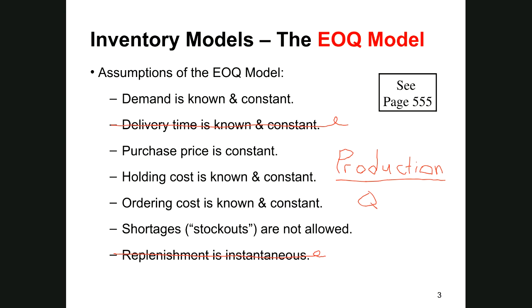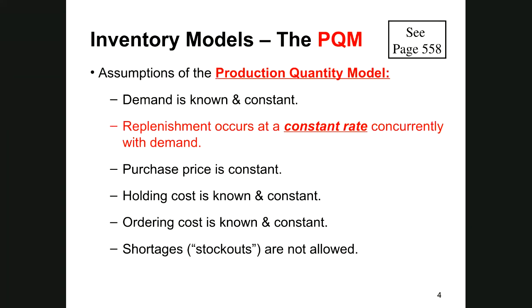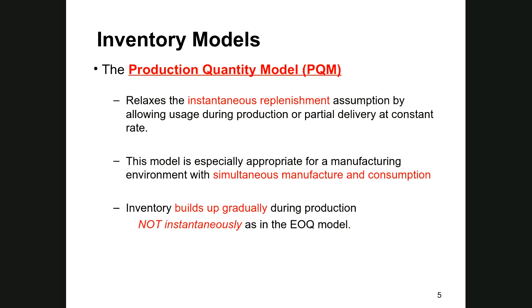Here's the summary of assumptions: demand is known and constant, replenishment occurs at a constant rate so our production is never interrupted, and it occurs at the same time that we're consuming. Purchase price remains constant, holding costs and ordering costs apply, and no stockouts are allowed — just as with the EOQ. The key thing to recognize is that we're producing at the same time that we're consuming, so we do away with instantaneous replenishment because we're simultaneously manufacturing and consuming.